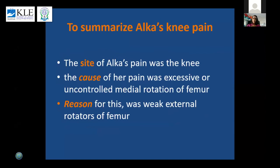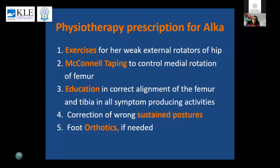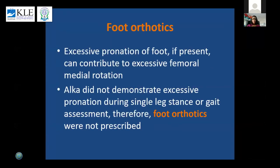To summarize Alka's knee pain: the site was the knee, but the cause was excessive and uncontrolled medial rotation of the femur, and the reason was weak external rotators of the femur. The physiotherapy prescription for Alka was exercises for the weak external rotators of the hip, McConnell taping, education on correct alignment of the femur and tibia in all symptom-producing activities, correction of wrong sustained postures, and foot orthotics if needed. Since she did not have excessive foot pronation during her movements, foot orthotics were not given.